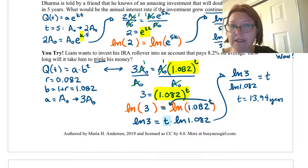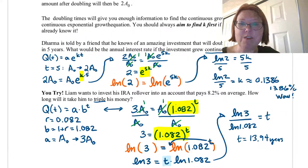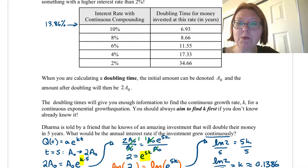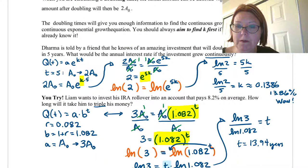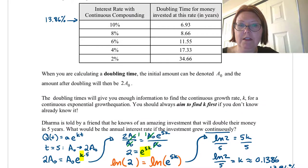Again, we can use the table of values we had earlier to judge the reasonability of this answer. 8% would double in 8.66 years. So it doesn't seem unreasonable that 8% would triple in about 14 years. That's a little under twice the length of time it would take to double.